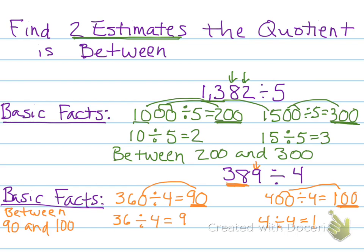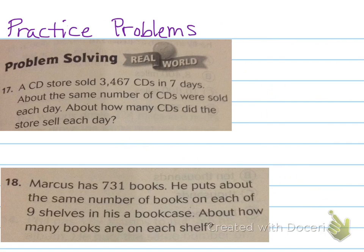All right. Time for practice problems. Another kind of shorter video tonight. Feel free to re-watch if you need some more practice. Two word problems. A CD store sold 3,467 CDs in 7 days. About the same number of CDs were sold each day. About how many CDs did the store sell each day? All right. And the second one, Marcus has 731 books. He puts about the same number of books on each of 9 shelves in his bookcase. About how many books are on each shelf. All right, friends. Have a great night.